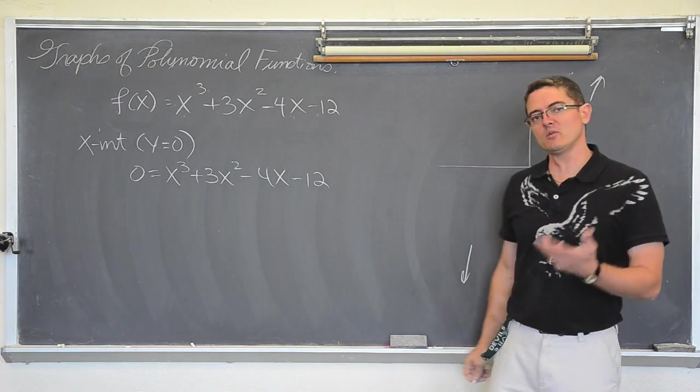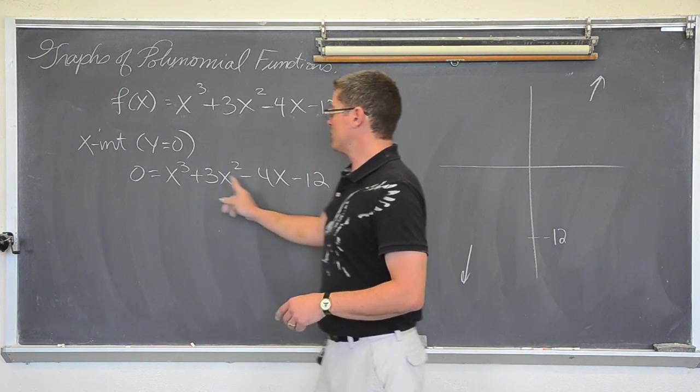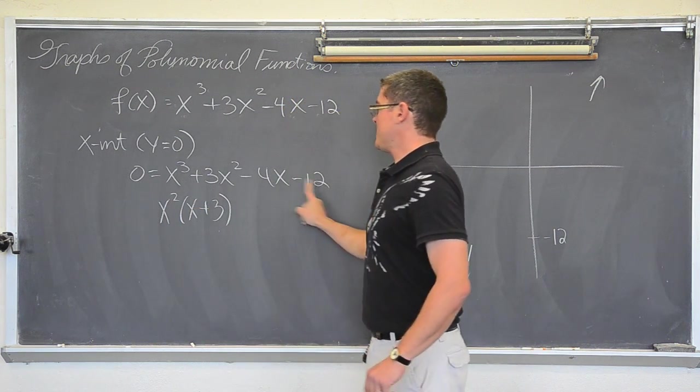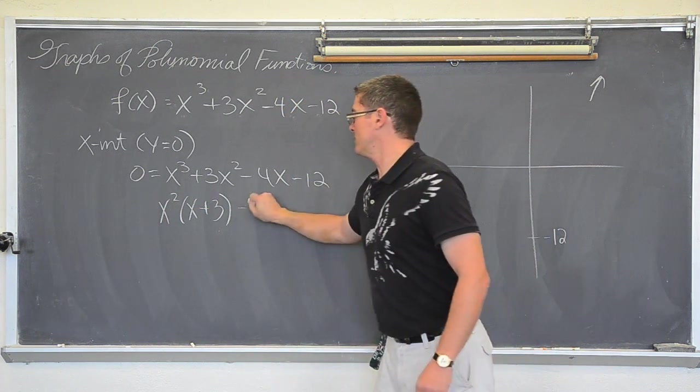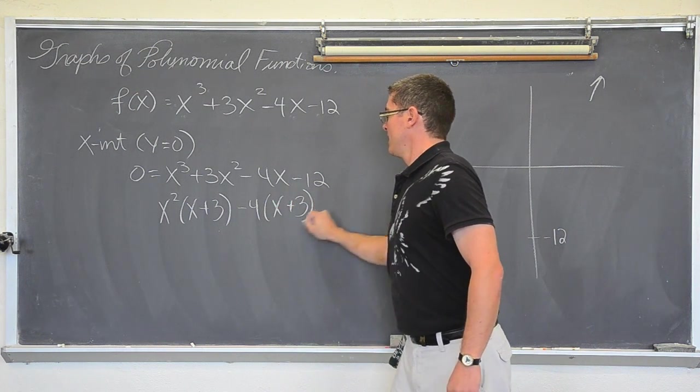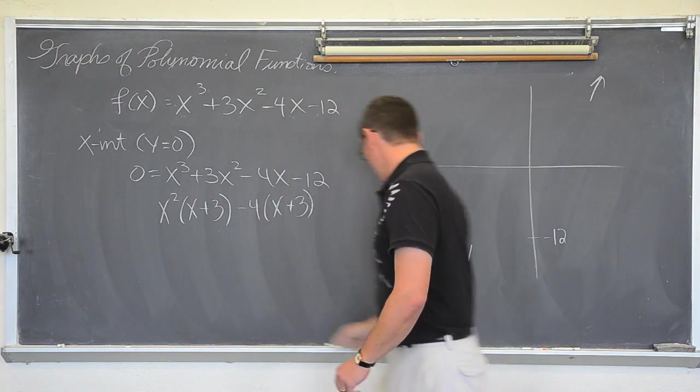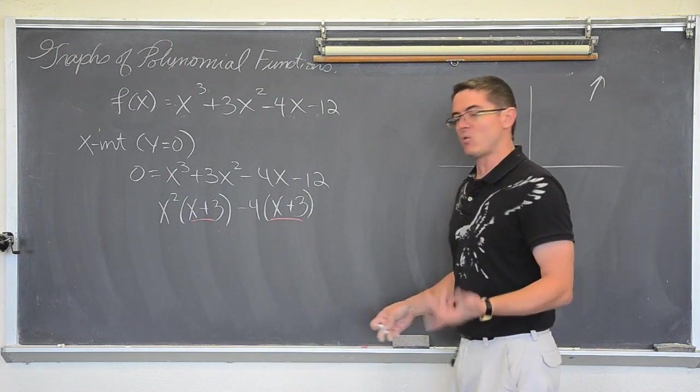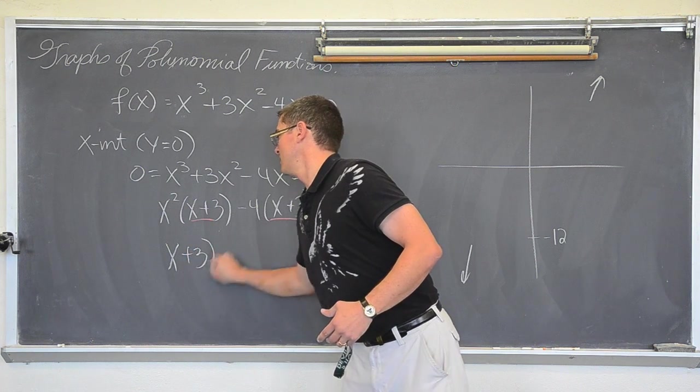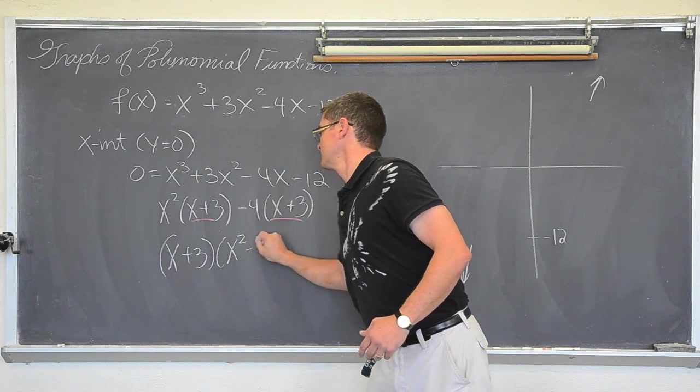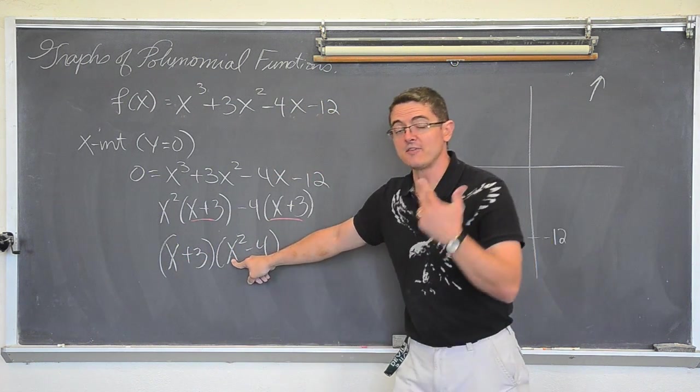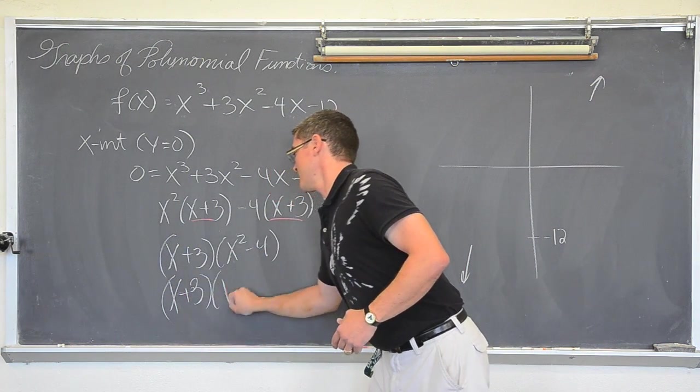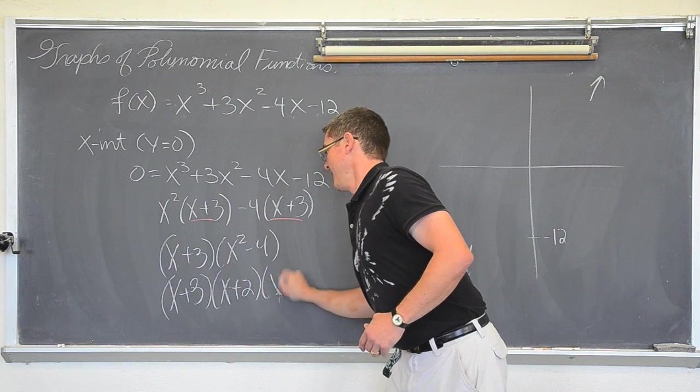When you have four terms, the only way you can factor is if it is by grouping. The first two can give up an x squared. The last two can give up a negative four. And if you do your factor by grouping correctly and it is a factorable polynomial, you will see the same factor show up twice. So I can factor that out again. Oh! Difference of squares. That is factorable again. So it is going to be x plus three times x plus two times x minus two.